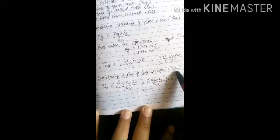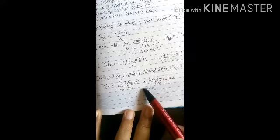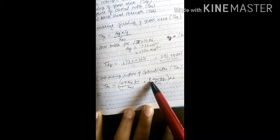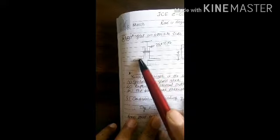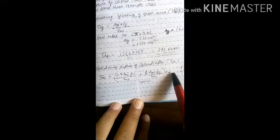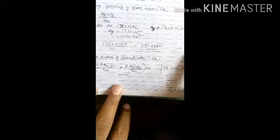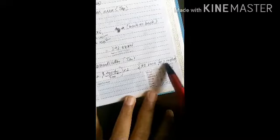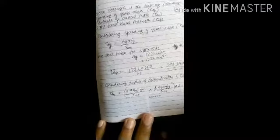Next, calculate the rupture strength (TDN). Refer to IS 800:2007, page 33 for the formula: TDN = 0.9 × Anc × fu / γm1 + β × Agu × fy / γm0. Since it is a double angle, multiply the formula result by 2. The formula applies to one angle, so multiplying by 2 gives the strength of both angles.